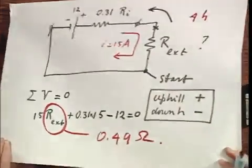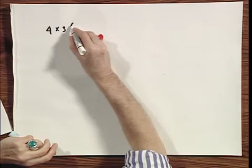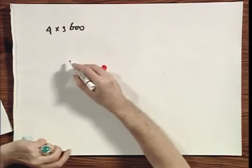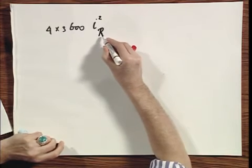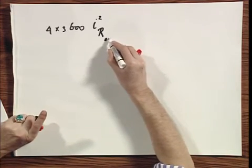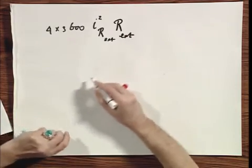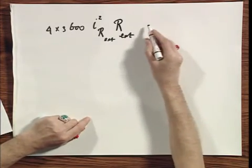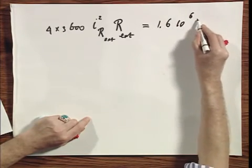And now comes the question, how much energy is supplied to this external resistor during the discharge? Well, the discharge takes four hours. There you go. I must multiply that by I square R going through that external resistor times the external resistor itself. You know all numbers. And what do you find? One point six times ten to the six joules.